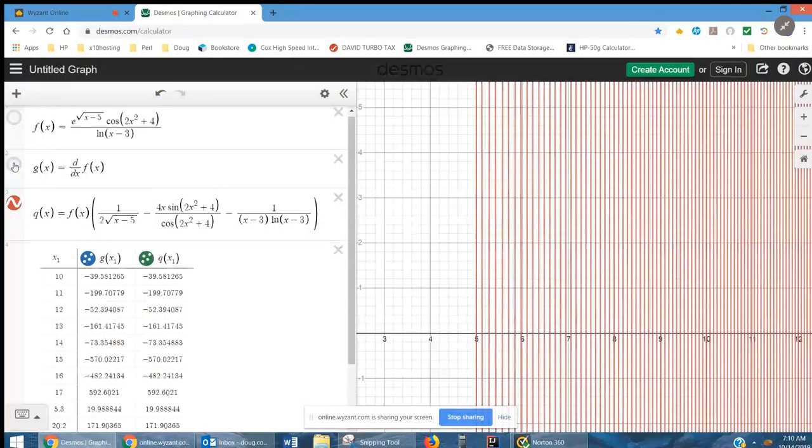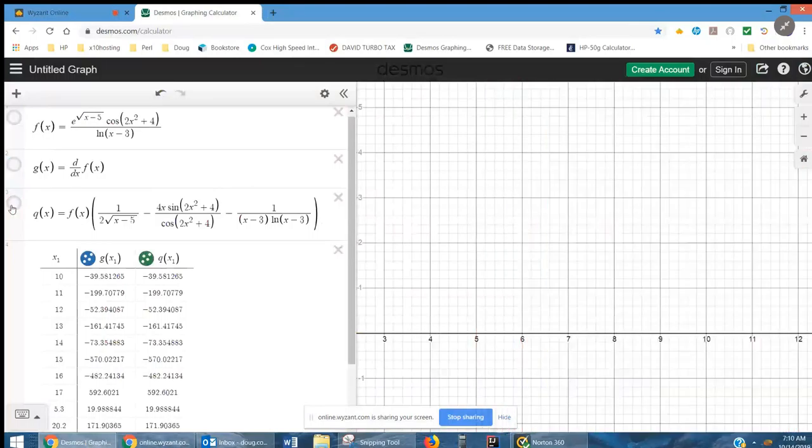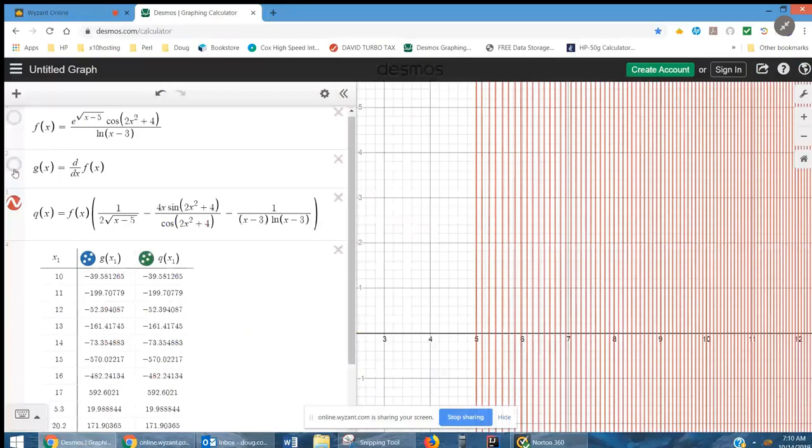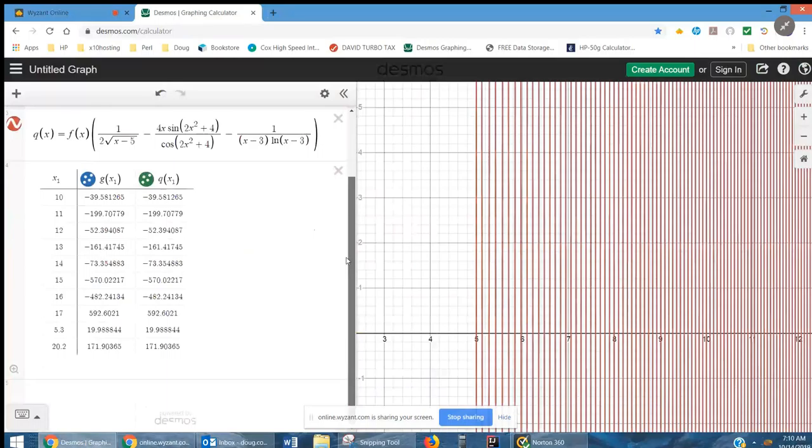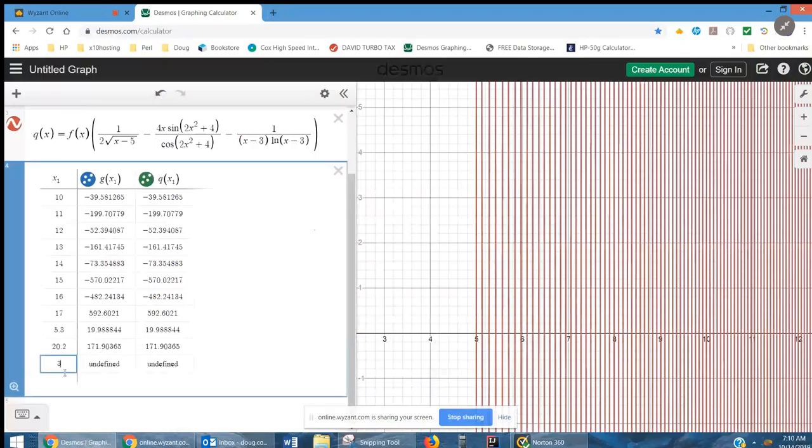And you can see that if I enable these two graphs, they look like they're identical. I don't see any extra lines appearing. And you can type whatever you want in this table, unless, of course, you type an undefined quantity like 3. It's undefined.